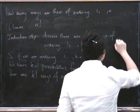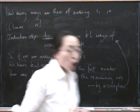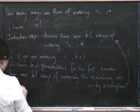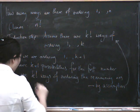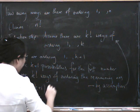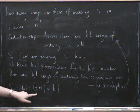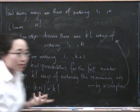So in total there must be k plus 1 times k factorial ways. The total is k plus 1 multiplied by k factorial. But what's k plus 1 multiplied by k factorial? Well, it's just k plus 1 factorial.